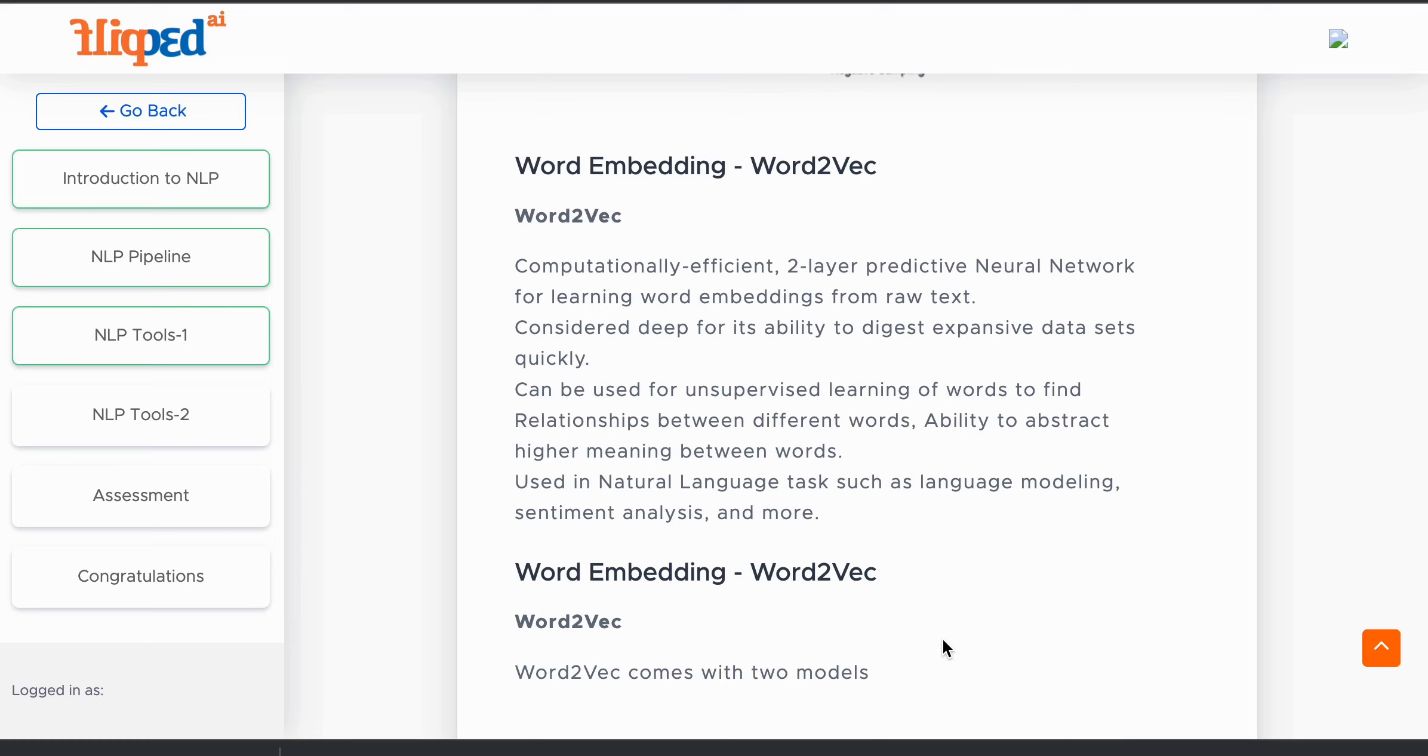Word2Vec is basically computationally efficient because it's a two-layer predictive neural network for learning word embeddings from raw text. This model is considered deep for its ability to digest expansive datasets quickly.